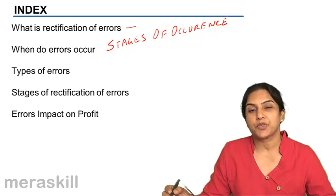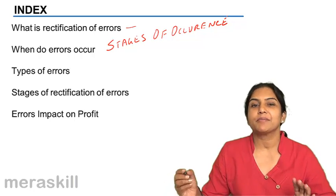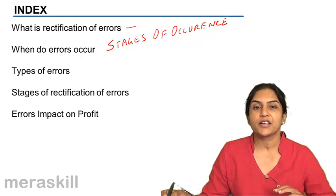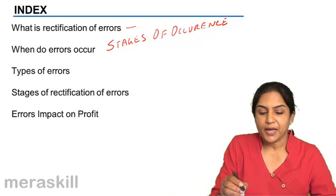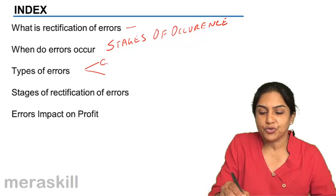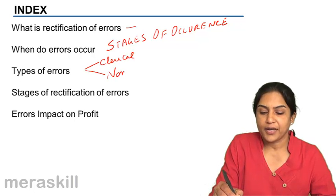What are the types of errors? There are some names: errors of principle, errors of omission, errors of commission, etc. Basically, they are supposed to be clerical and non-clerical.